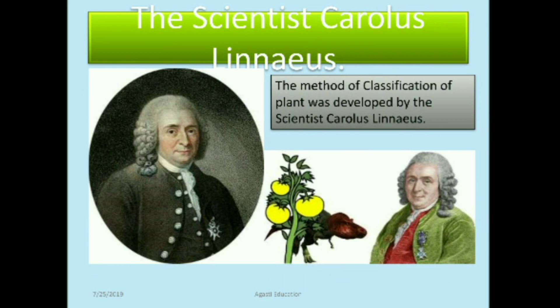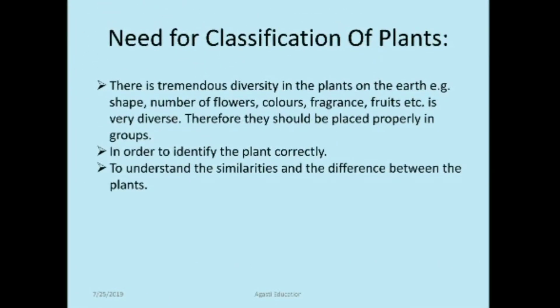The method of classification of plants was developed by the scientist Carlos Linnaeus. The need for classification exists because there is tremendous diversity in plants on earth — in shape, number of flowers, colors, fragrance, fruits, etc. Plants should be placed properly in groups to identify them correctly and to understand similarities and differences between them.